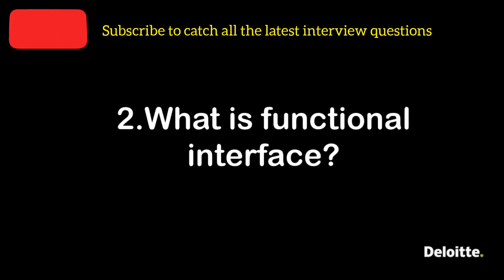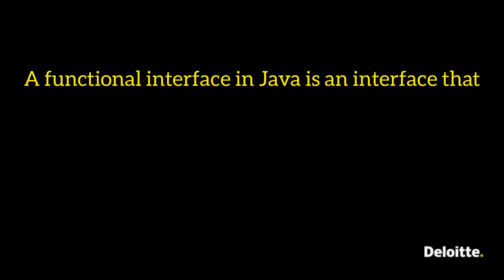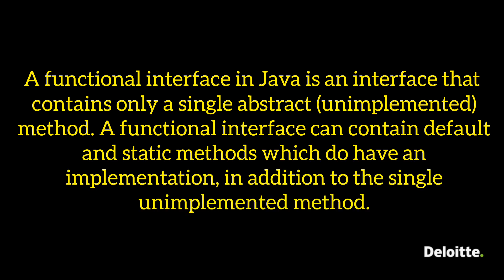The next question is: what is a functional interface? A functional interface in Java is an interface that contains only one single abstract method — abstract meaning an unimplemented method. There can be any number of default and static methods. These kinds of interfaces existed before Java 1.8 as well, but the @FunctionalInterface annotation came into picture in Java 1.8.